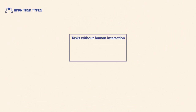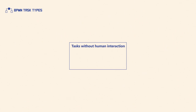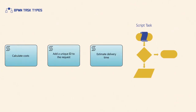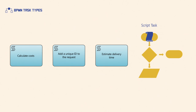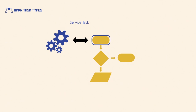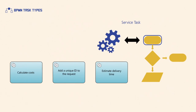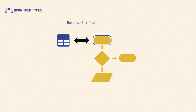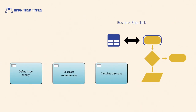For tasks without human interaction, BPMN defines the types: service task, script task, and business rule task. A script task should be used in a case when a task is executed locally within a business process engine. A service task should be used when an external service is called to perform a task — this could be a web service or an automated application. A business rule task represents communication with a business rules engine, inputting information and receiving output of calculations.